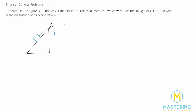Welcome to Mastering Solutions. In this problem, we're told that the ramp in the figure is frictionless, and if the blocks are released from rest, which way does the 10 kilogram block slide, and what is the magnitude of the acceleration? We have a 10 kilogram block and a 5 kilogram block.